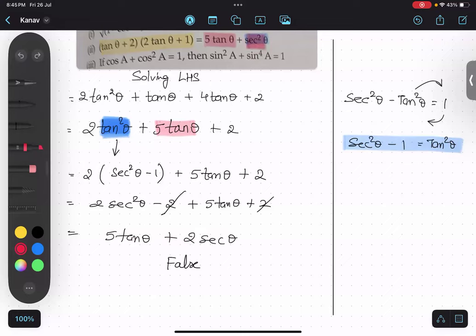Basically this sec should be 2 sec θ, not square. Understood? No no, it should be a square, sorry, it should be a square. Yeah, so that's it from this question.